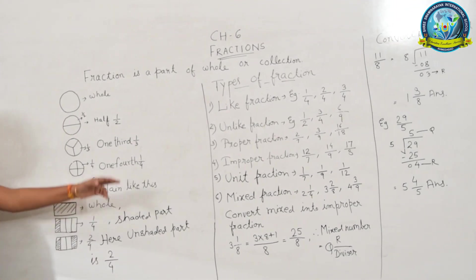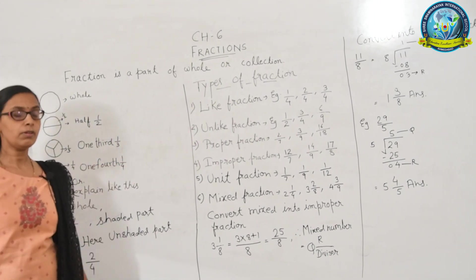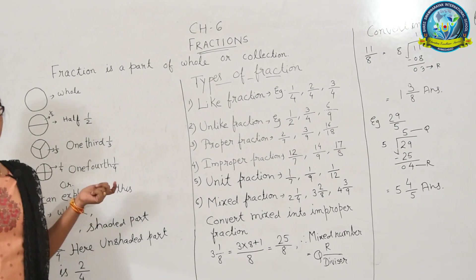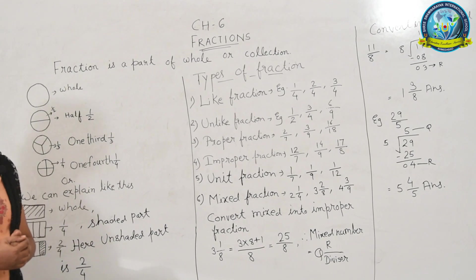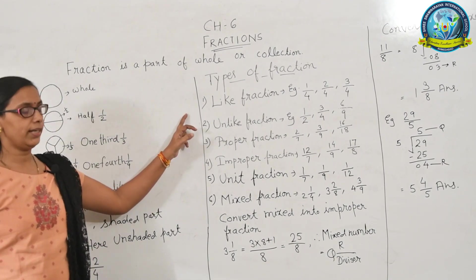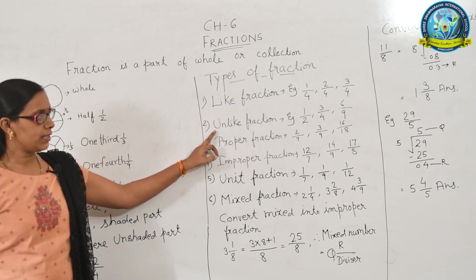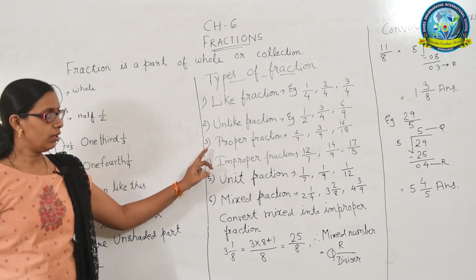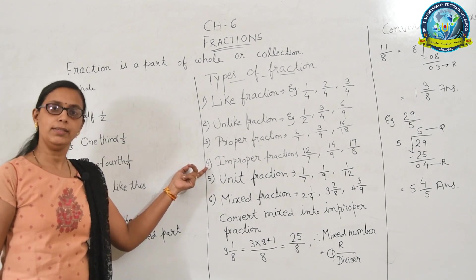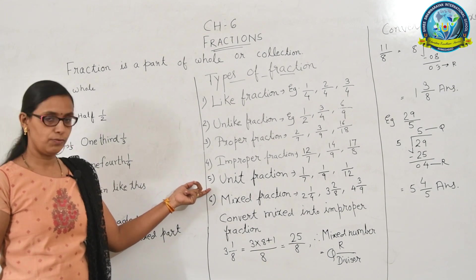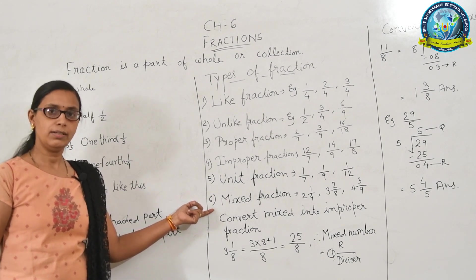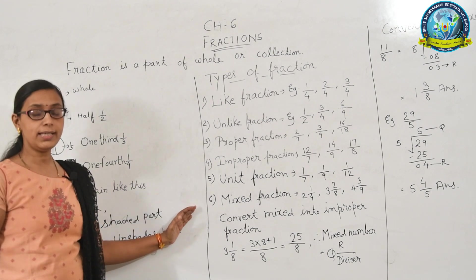Our next topic is Types of Fractions. What are the types of fraction? There are six types of fraction: first is like fraction, second is unlike fraction, third is proper fraction, fourth is improper fraction, fifth is unit fraction, and the last one is mixed fraction.